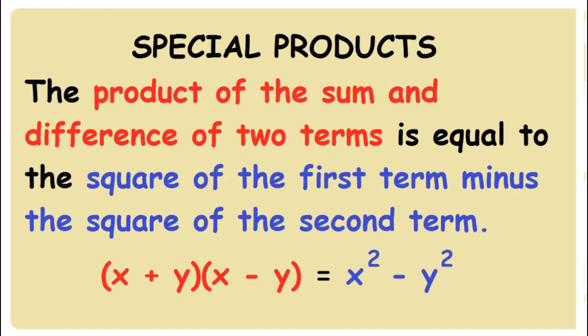The product of the sum and difference of two terms is equal to the square of the first term minus the square of the second term.